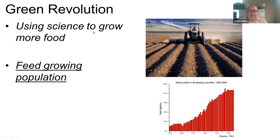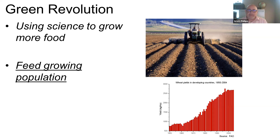I want to go back to the idea of being able to feed our growing populations, particularly in less developed countries. Back during the Cold War after the 1940s and 1950s, there was real concern about feeding people in developing countries. In the United States we had a highly industrialized type of farming, using science to increase yields and do more farming with fewer people. The Green Revolution during the Cold War had the United States bring a lot of its technology to other parts of the world to try to increase their food supply and feed more people.